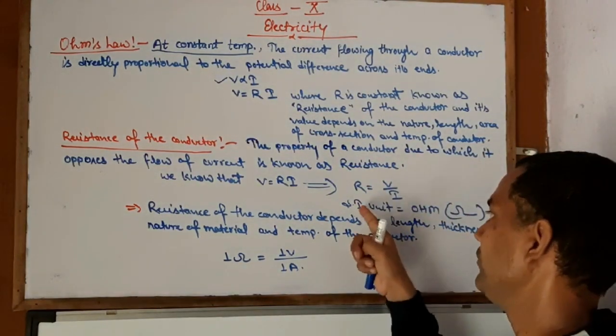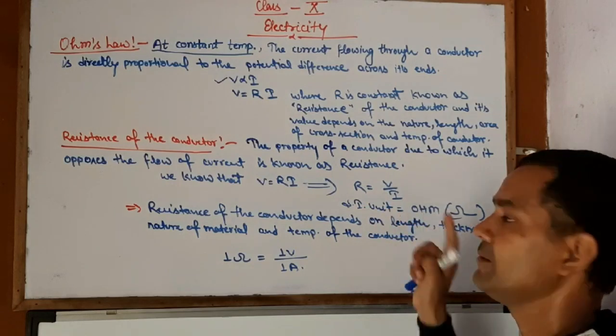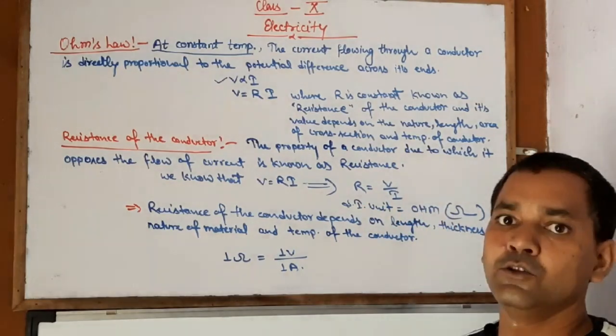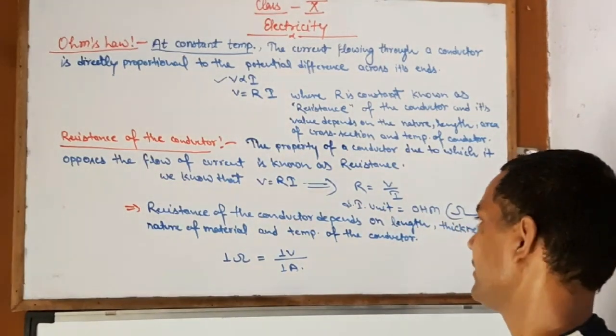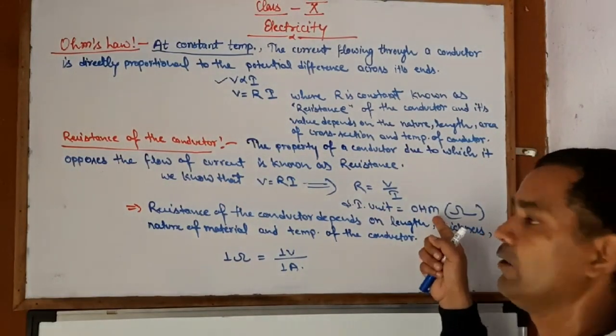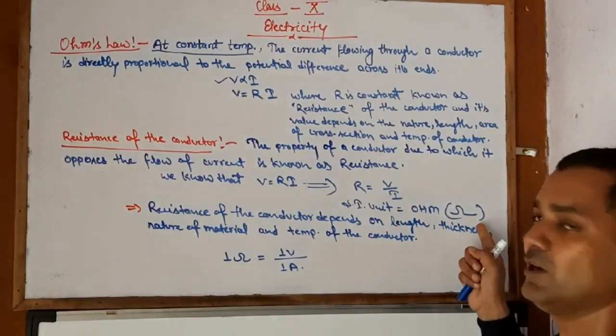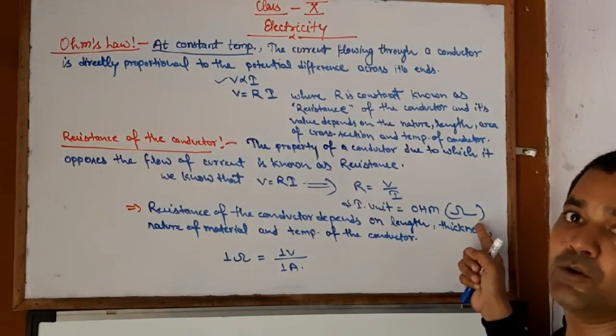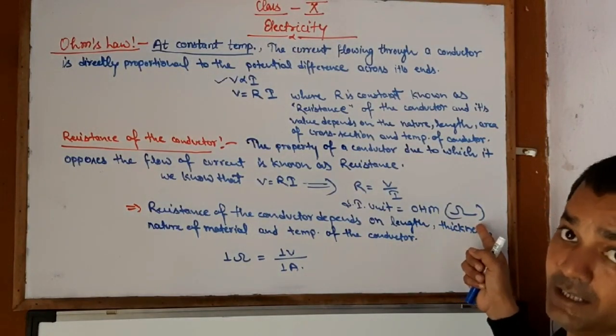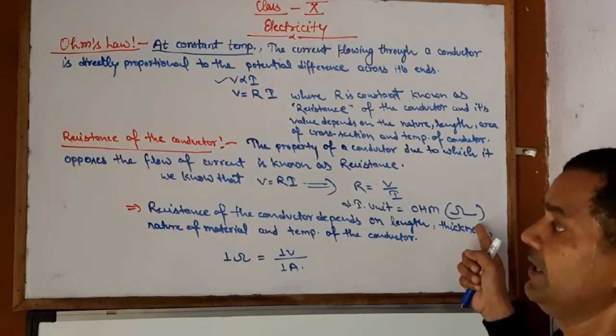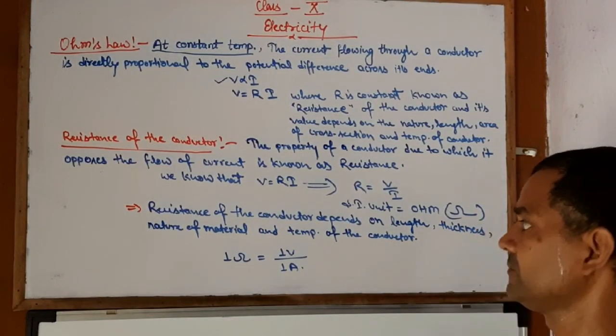Now let's talk about the SI unit of resistance. The SI unit of resistance is ohm. The symbol for ohm is omega (Ω). It is clear.